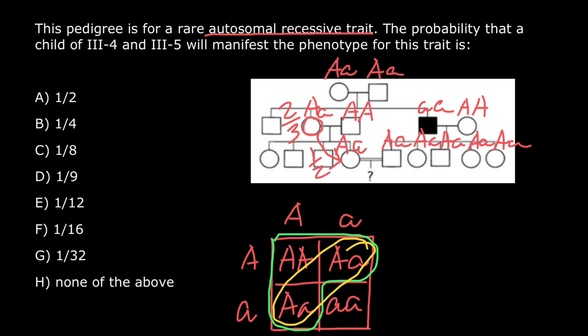So because mother has 2 alleles, dominant and recessive, chances are equal that this is going to be dominant allele or recessive allele. We are specifically interested in recessive allele and chances are 50% or one half.